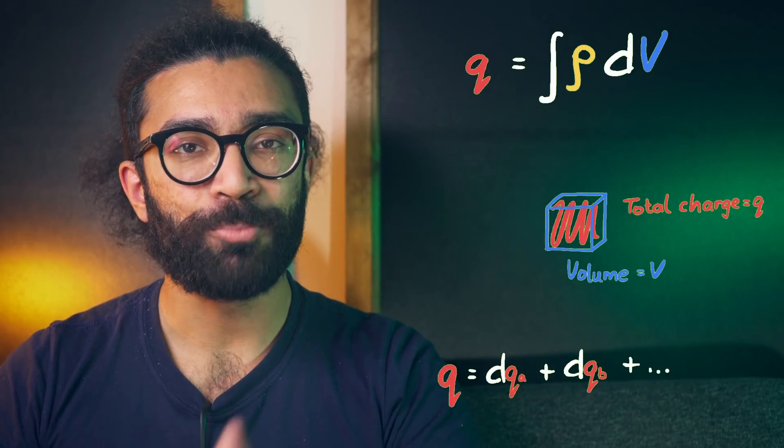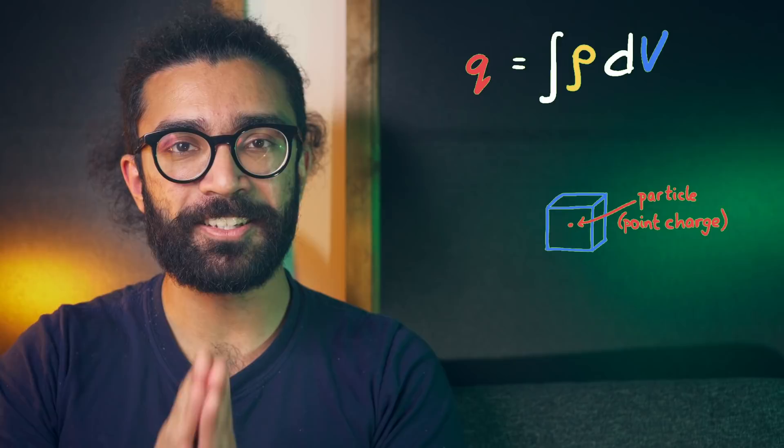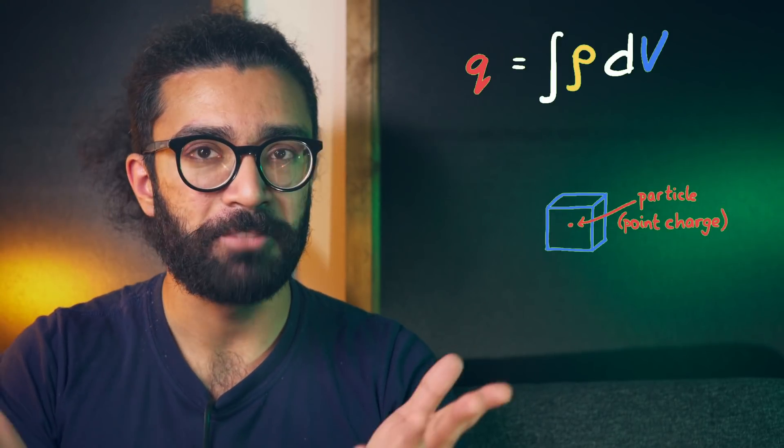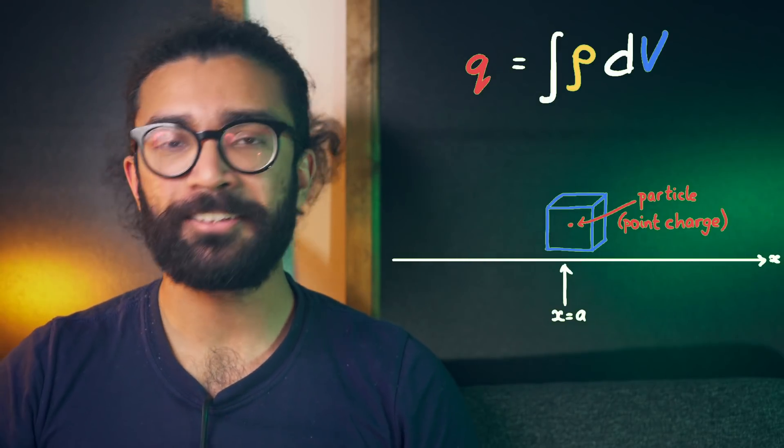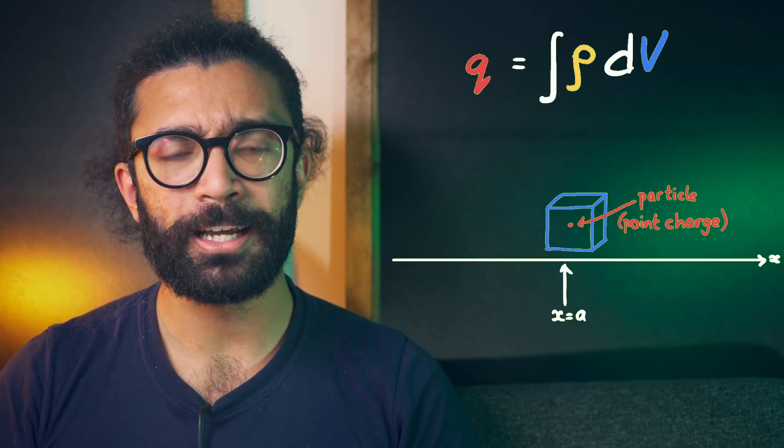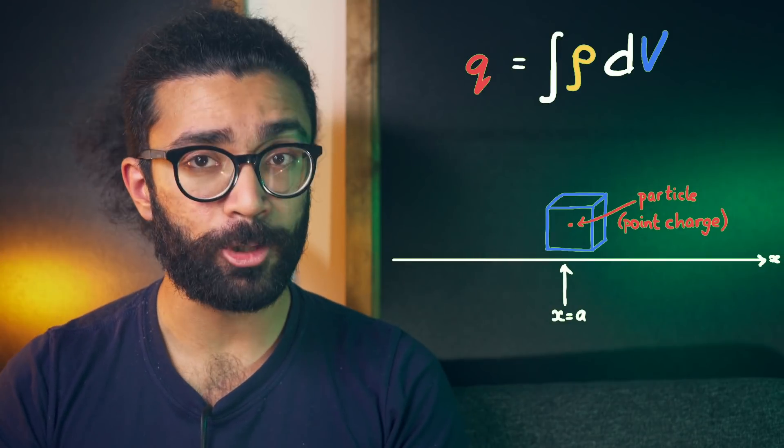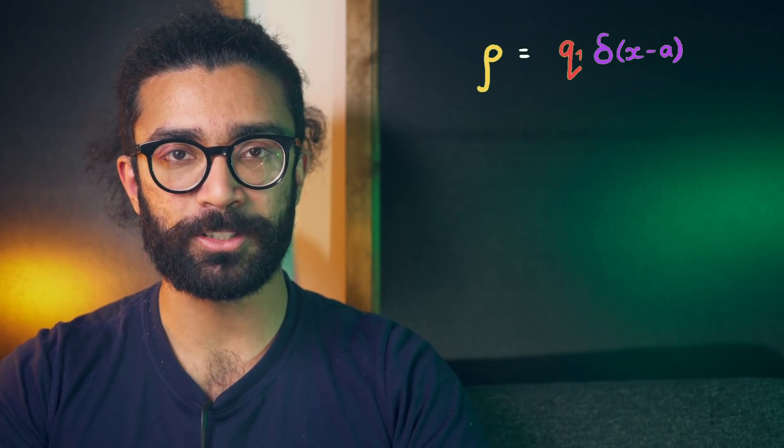But remember, for a simple particle, we assume that the charge is actually not distributed at all, and is instead all found at one single point. Let's say x equals a. And again, to keep things simple, we'll only look at the x coordinate for now, and we'll ignore the y and z. You could apply the same logic to the y and z directions, since we're thinking about 3D volumes rather than a single dimension, but anyway. Here's what we do. We say that the charge density is equal to the magnitude or size of the charge on the particle, which we can call q1, multiplied by a delta function, localized at x equals a.